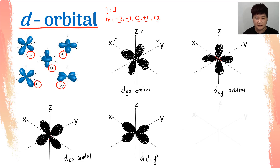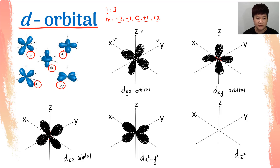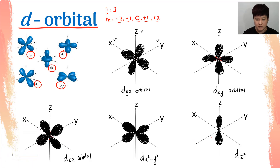Last but not least, how about DZ²? Z square means it will be sitting on the Z axis. But since I need a cloverleaf shape on Z, this is the most special one — we have a ring in between the loops. First, I will have a loop on the Z axis because it's Z square. After that, I will then have a donut ring that circles around the Z axis. That is my DZ² orbital — the ring will be circular around it.